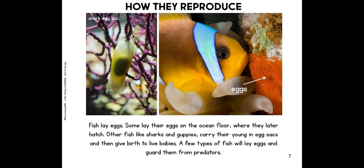How they reproduce. Fish lay eggs. Some lay their eggs on the ocean floor, where they later hatch. Other fish, like sharks and guppies, carry their young in egg sacks and then give birth to live babies. A few types of fish will lay eggs and guard them from predators. We see here an egg sack from a shark, and over here this clownfish has little eggs — if you watched Finding Nemo, this might look familiar.